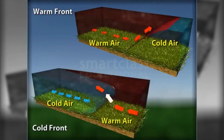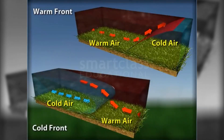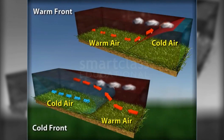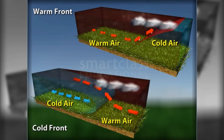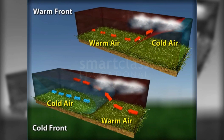As the warm air rises, it cools enough to condense the water vapor to form clouds. As the clouds grow bigger, the water droplets become too heavy to hold and come down as rain.